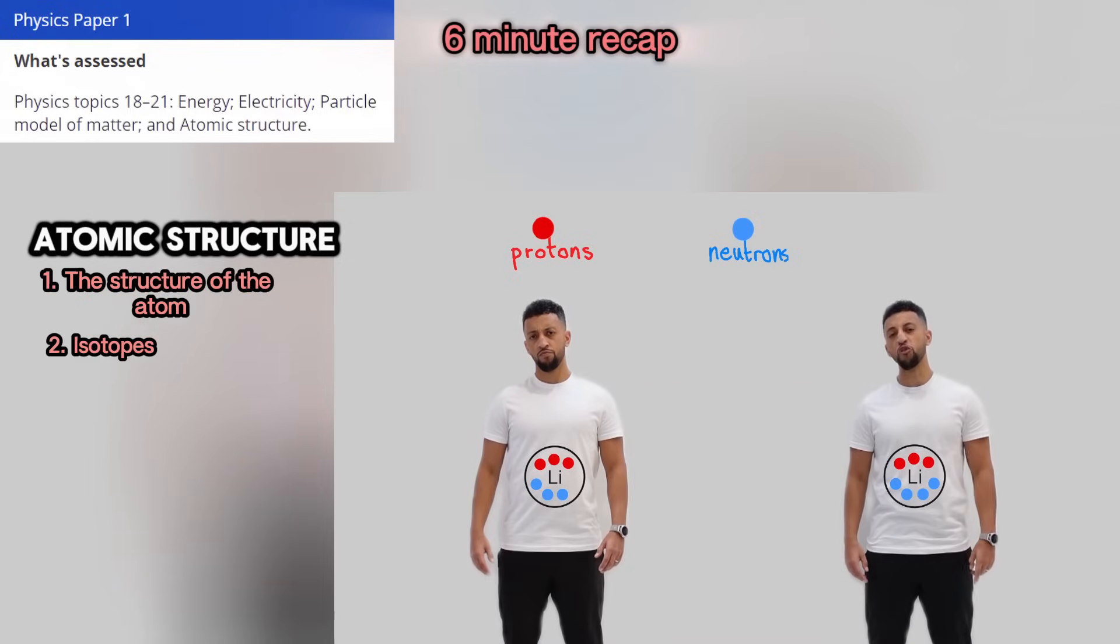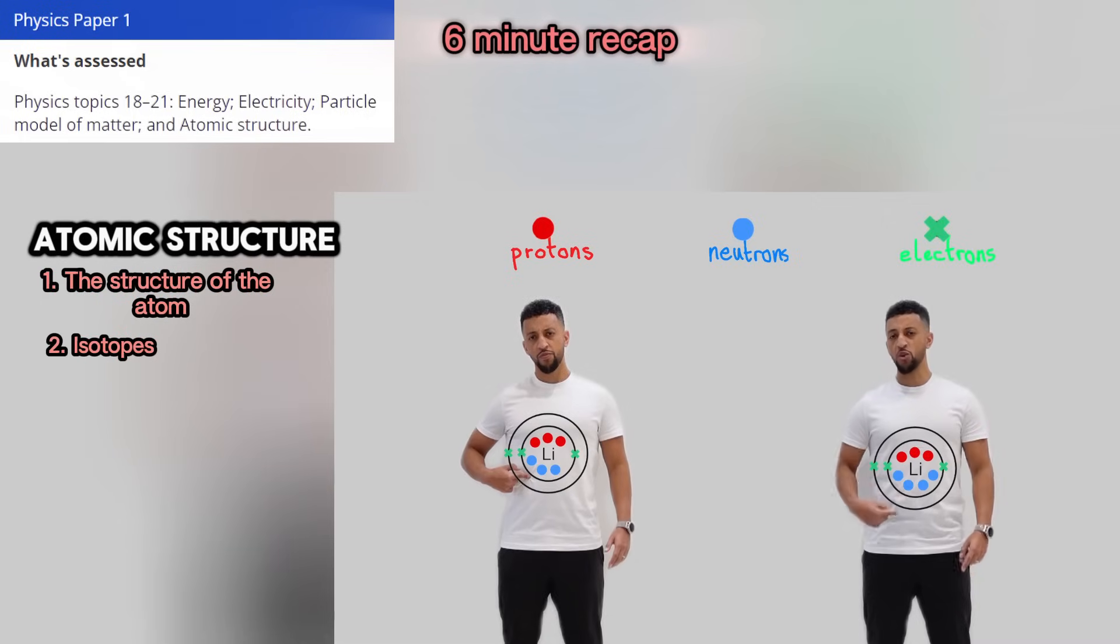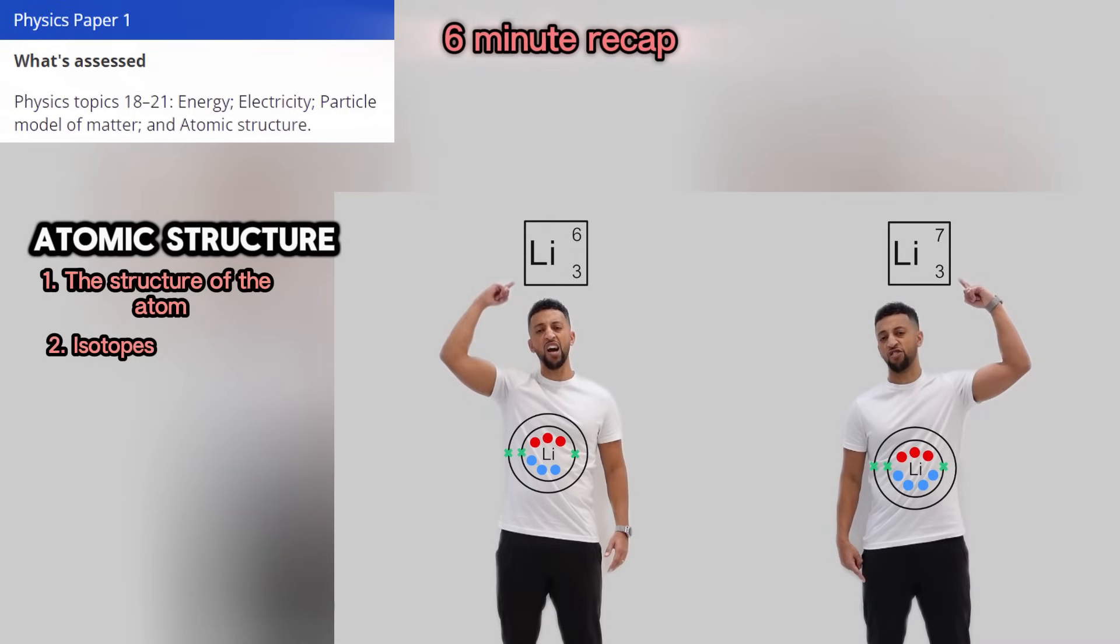We're both the same atom, so what's happened? I'll give you two secs to see if you fathom. Protons the same, electrons the same. The only difference is the neutrons aim. Same element but different isotopes. Atomic numbers match, mass numbers don't.